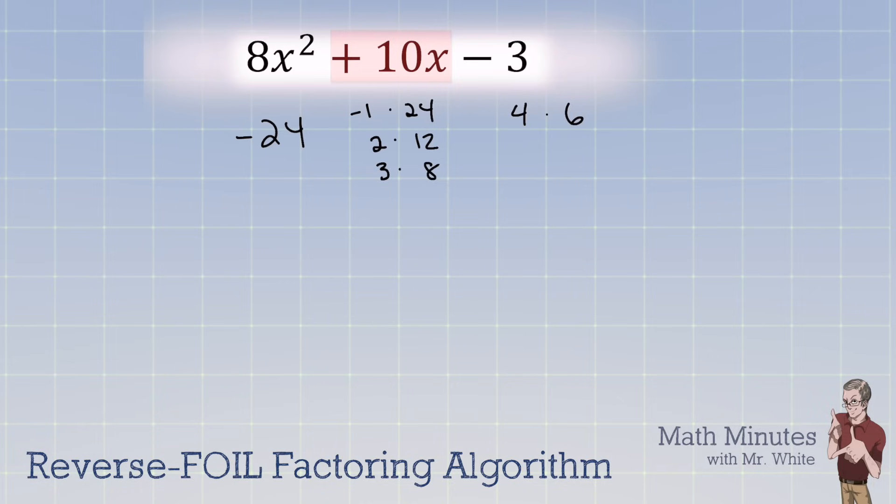So I'm going to change all the smallest numbers to be negative. Because remember, I want to make a positive 10x. Now, which of those adds up to positive 10x? It's not 4 and 6, is it? It's 12 and negative 2. We will take our 10x. We're going to rewrite it as negative 2x plus 12x. Bring down the other two terms.